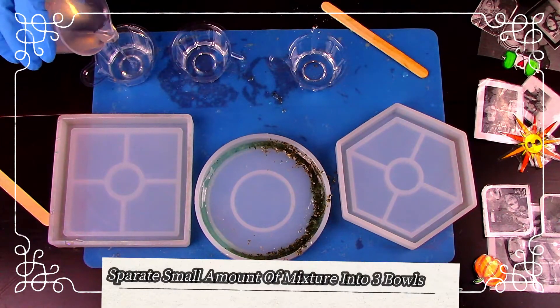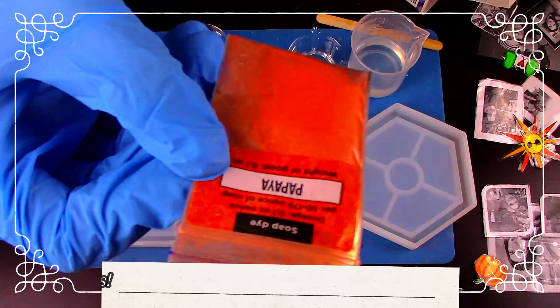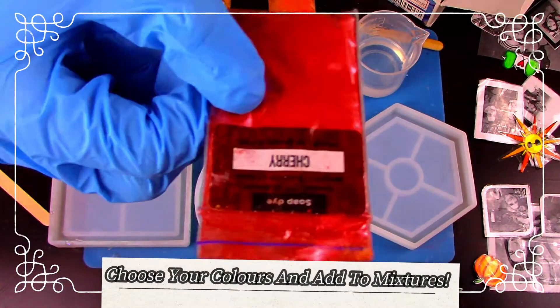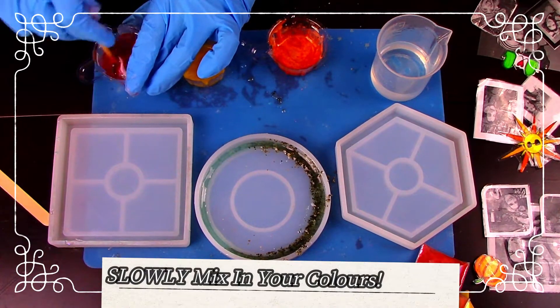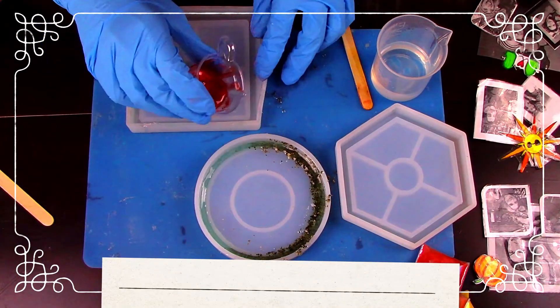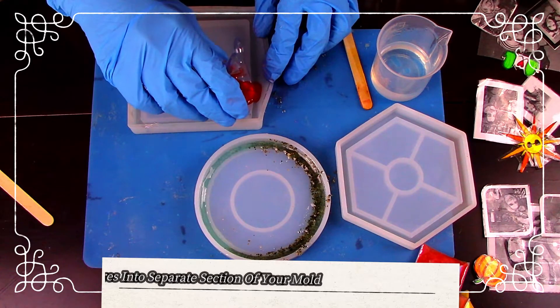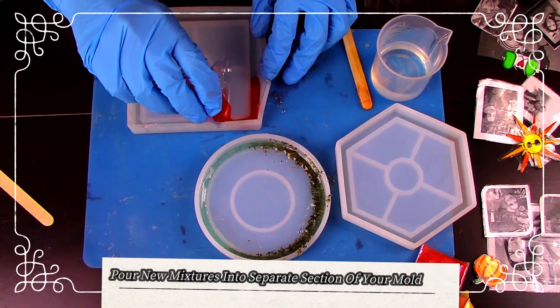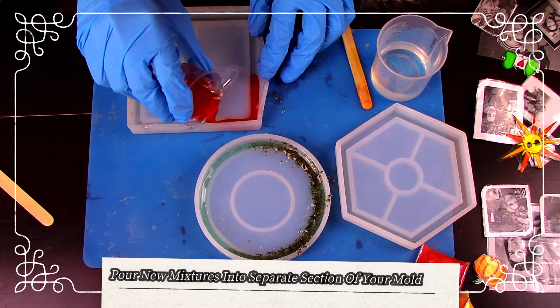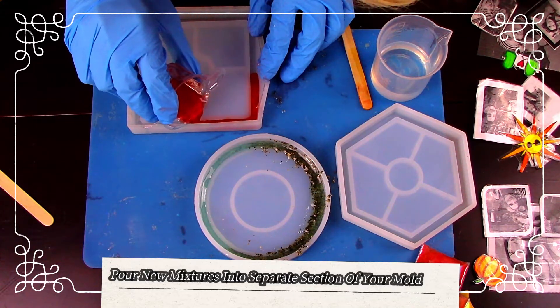Separate three small amounts of the mixture into bowls. Choose some fun autumn colors for your mold. Now mix in your colors. When pouring these resins in here, we're going to be doing what I did in my last video for my Galaxy phone stand. We're going to be putting the resin into separate sections of the side of the mold and then blending them together with a popsicle stick.